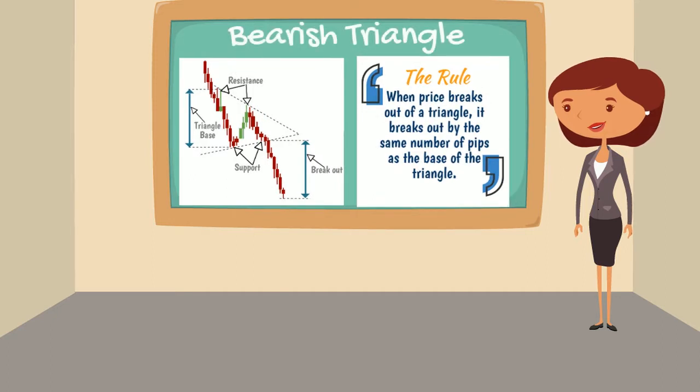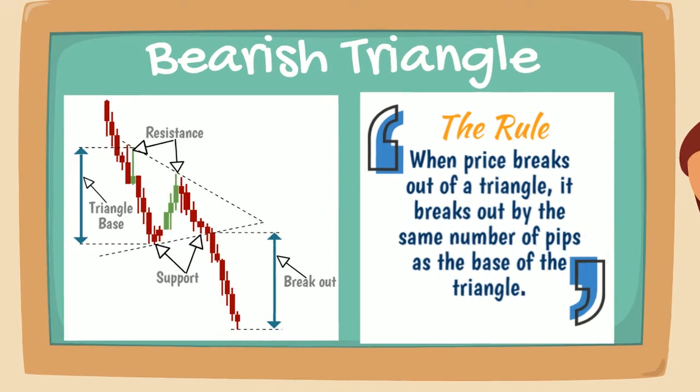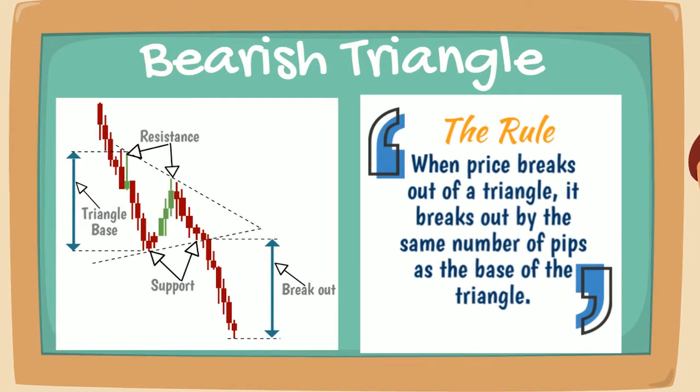The rule for a bearish symmetrical triangle is when price breaks out of the triangle, it breaks out by the same number of pips as the base of the triangle.